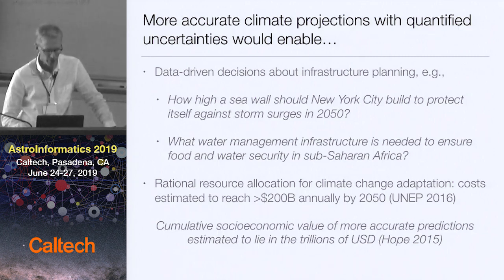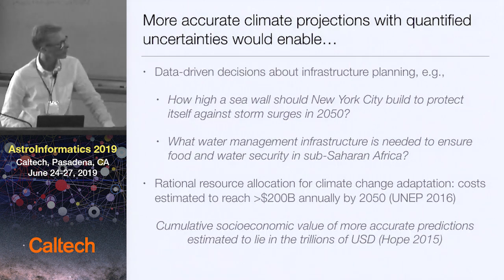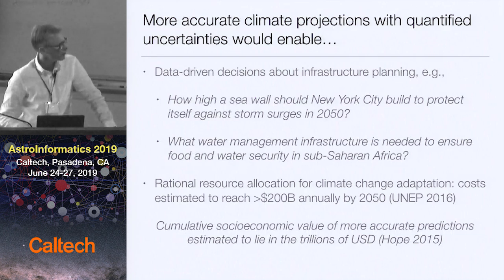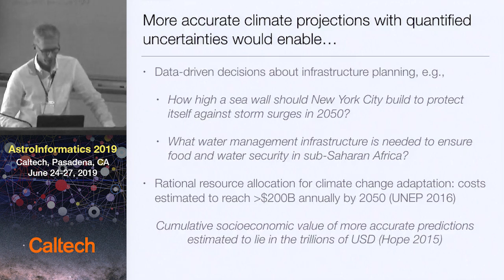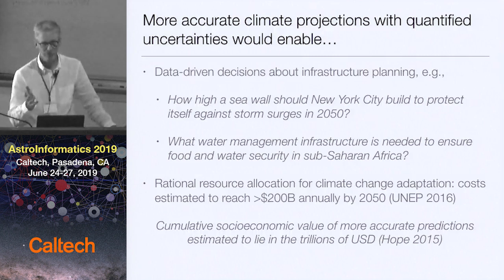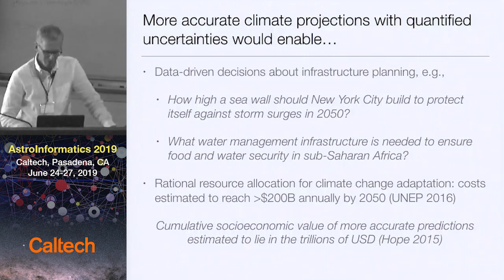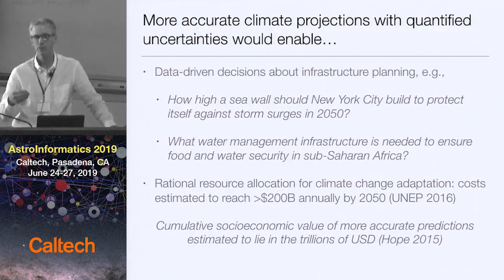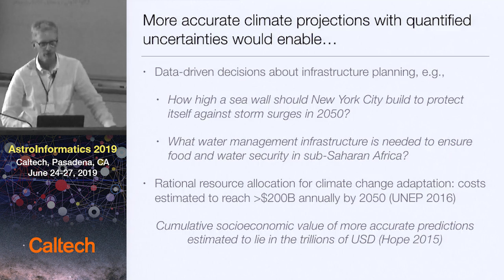The economic value of better predictions is substantial. The United Nations estimates that climate change adaptation will cost something like 200 billion dollars a year by 2050. Estimates of the economic value of reducing uncertainties in climate predictions by a factor of two within 10 years come out to around 10 trillion dollars in 2005 US dollars. We need better information and we need it fast, because the information we provide to society is a strongly declining function of time — the experiment out there is already happening.